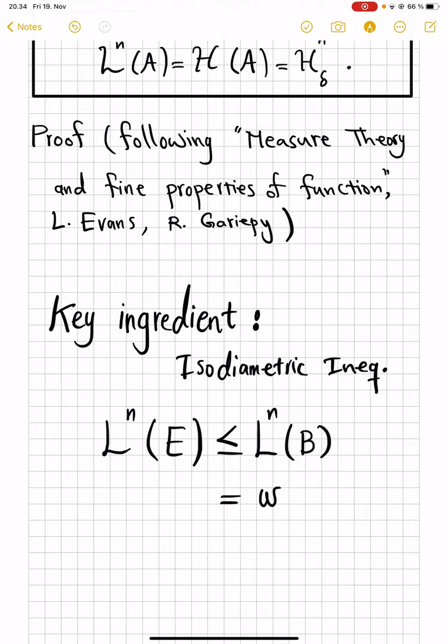And what is the Lebesgue measure of a ball? That's some constant, which we have denoted by ω_n, and the radius to power n, which will be diameter of B, which is equal to diameter of E, divided by 2 to power n. So remove this intermediate part, and what you get is the isodiametric inequality.